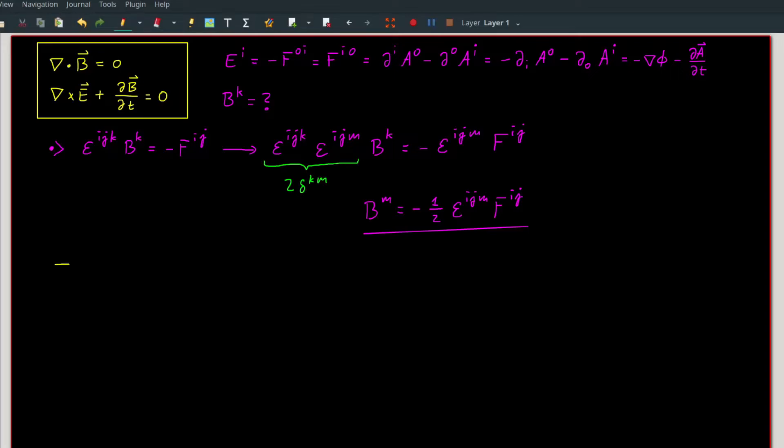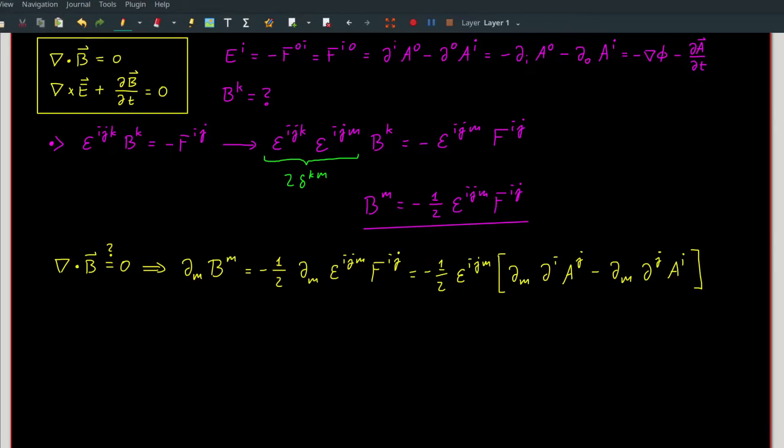Now, we want to check if the divergence of B is zero. Let us switch to the index notation again. Divergence of B is ∂_m B^m, substitute in B that we just found a second ago, and then plug in the definition of F. As mentioned before, since we are dealing with only spatial indices, we can freely move the indices up and down without a problem. Here, I move the index of the derivative down.